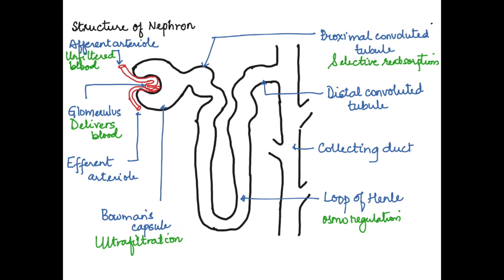Then as the filtrate moves down to the loop of Henle, water balance is maintained there, so osmoregulation happens. The filtrate then moves up to the distal convoluted tubule.